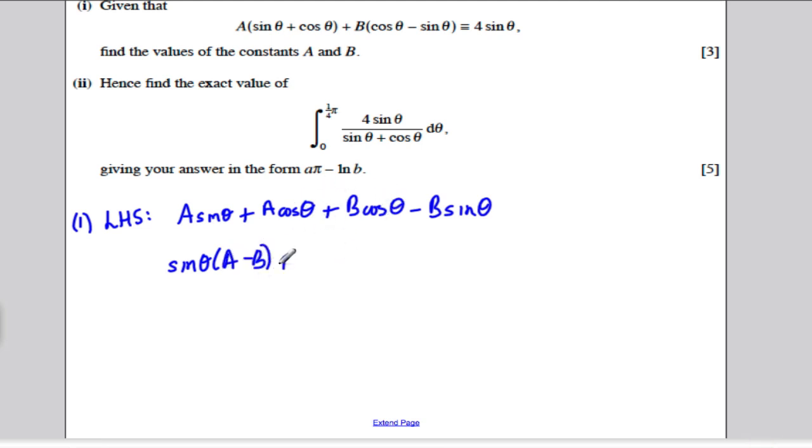And factorising cos theta from these two, how many cos thetas have we got? We've got A plus B cos thetas. And that's the left-hand side.